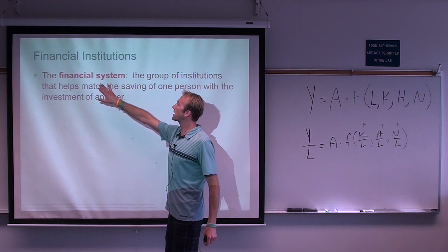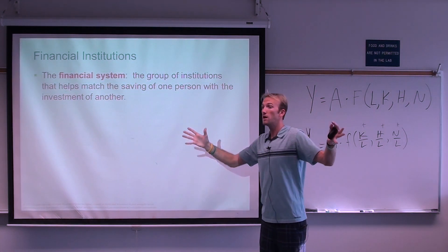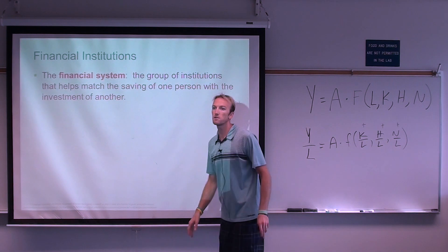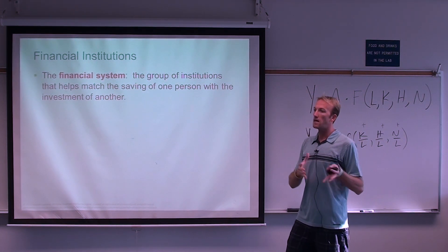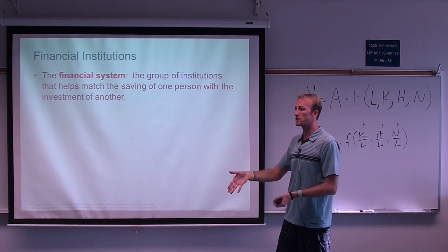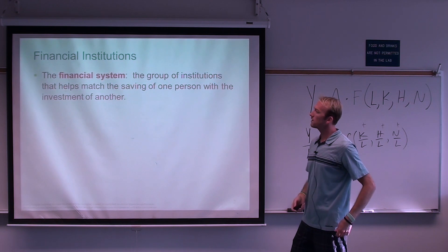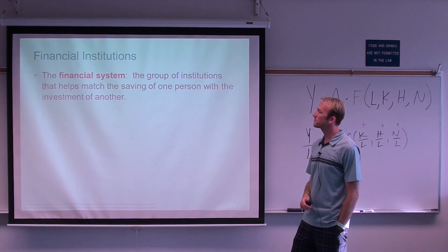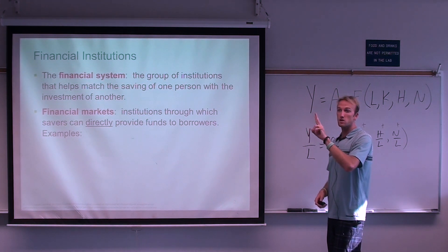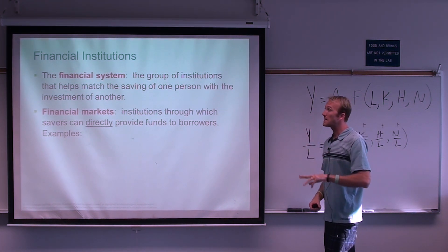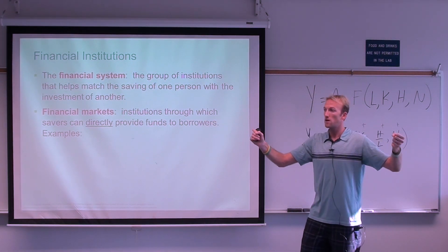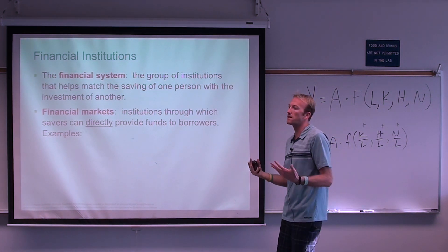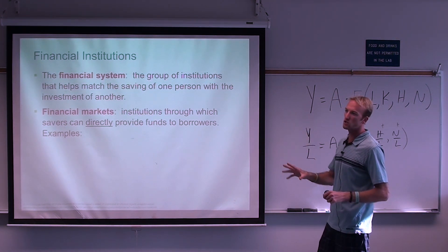In general, we refer to it as the financial system — the general term for all things that match up savers with investors. The savers are the people with money at the end of the day, and the investors are the people who take extra money and build productive capital. There are two main broad categories in the financial system: financial markets and financial intermediaries. First, we're going to talk about financial markets — the most simple piece of the financial system.